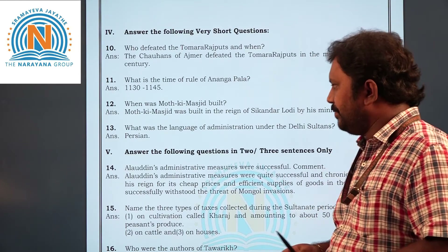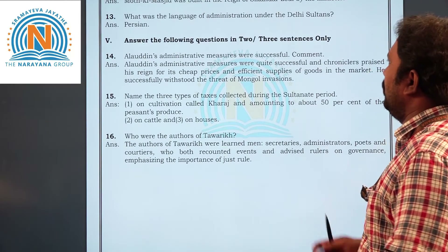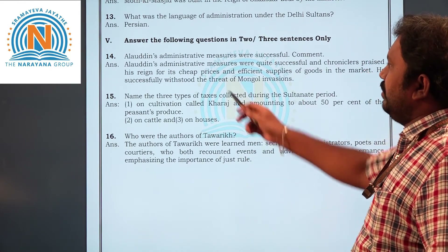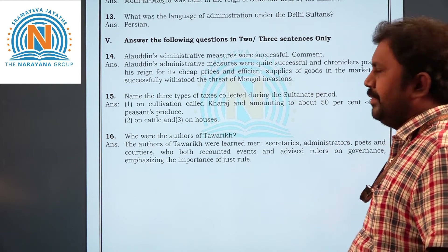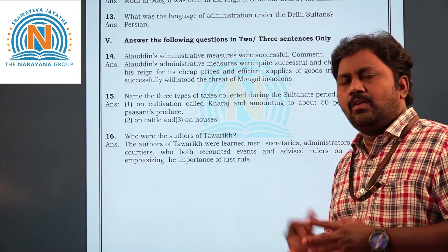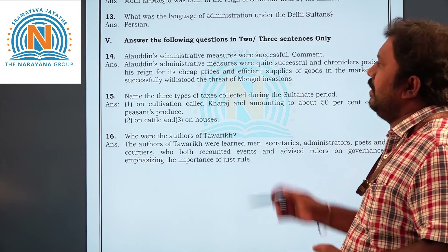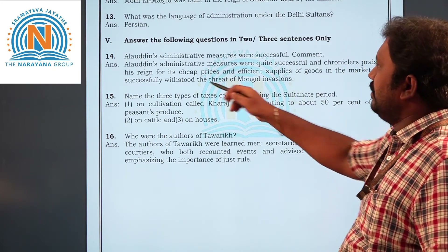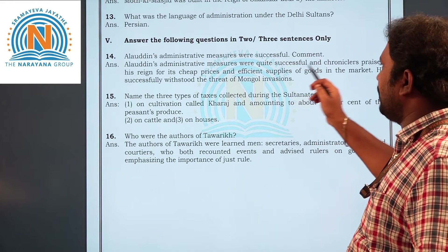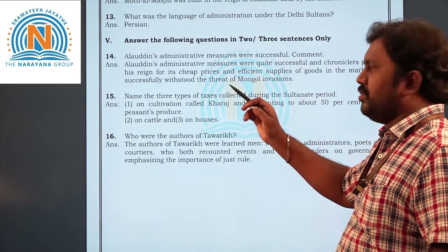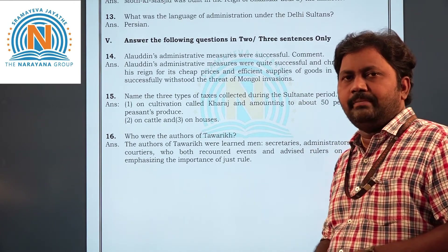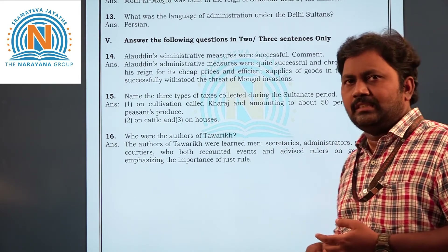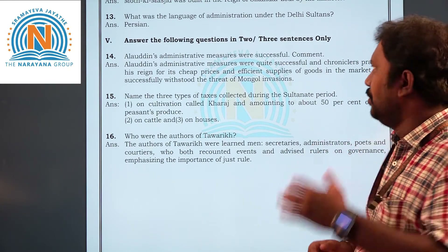Now the fifth section — two to three sentence answers. Question fourteen: Alauddin's administrative measures were successful — comment. His administration was very successful because of controlled prices and efficient supply of goods in the market. He also successfully withstood the threat of Mongol invasions, which is why his administrative measures are considered good.